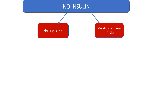The key thing about DKA is that there is no insulin — this is really the big problem here. Because there is no insulin, glucose cannot go inside the cell; it stays outside. And at the same time, cells are starved for energy.